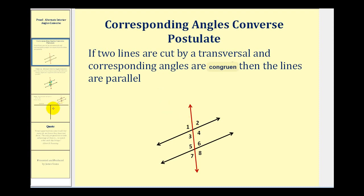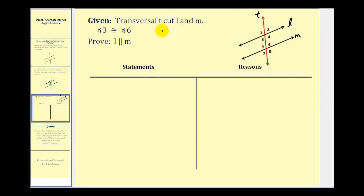Let's take a look at our proof. We're given that transversal t cuts lines l and m, and we know that angle three is congruent to angle six. This angle here is congruent to this angle here, and those are alternate interior angles. Before we start, we want to devise a strategy so that we can get corresponding angles to be congruent and therefore the lines will be parallel.